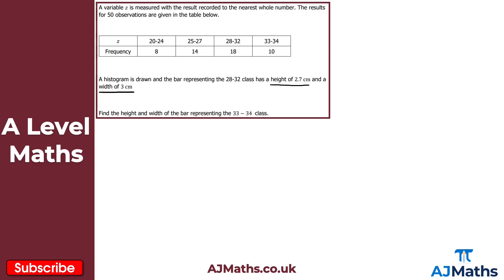For this question here, we just want to find the height and width of the bar representing the 33 to 34 class. So all we're really concerned about here is these two classes. This is a very typical exam style question for histograms. I think there's a bit of a tendency here to overcomplicate questions that look like this. However, it is quite straightforward.